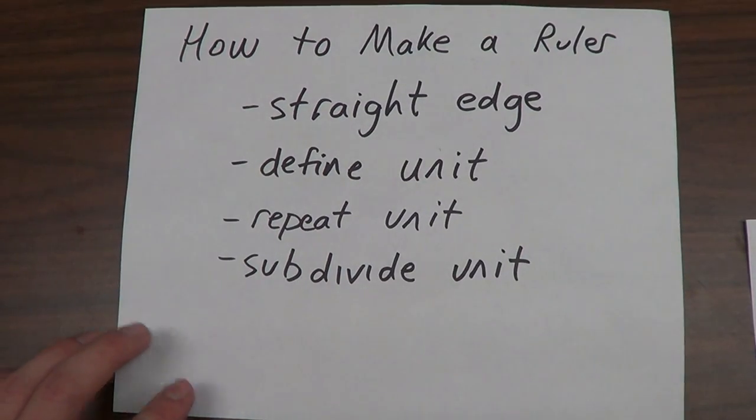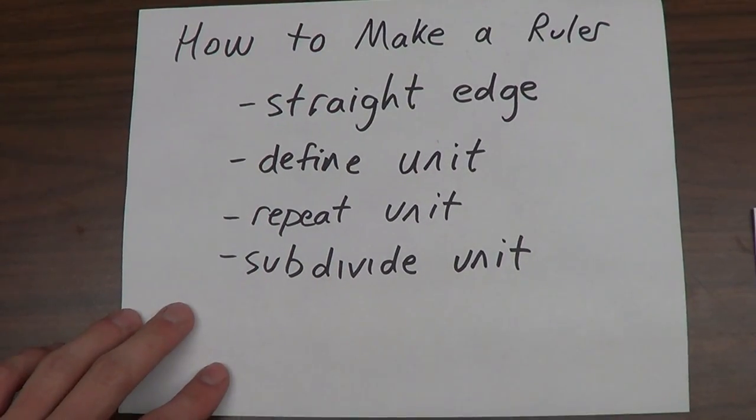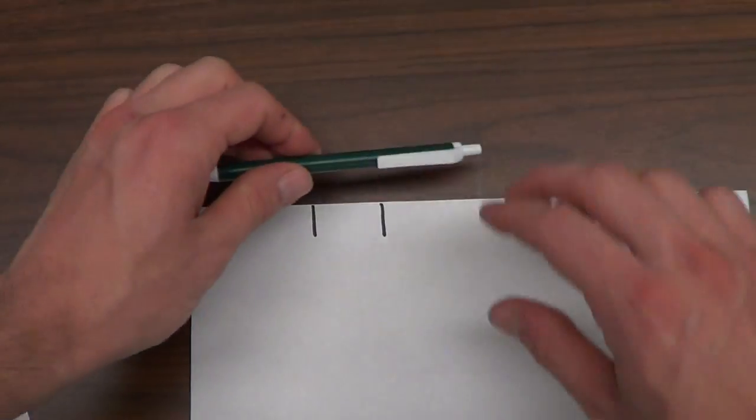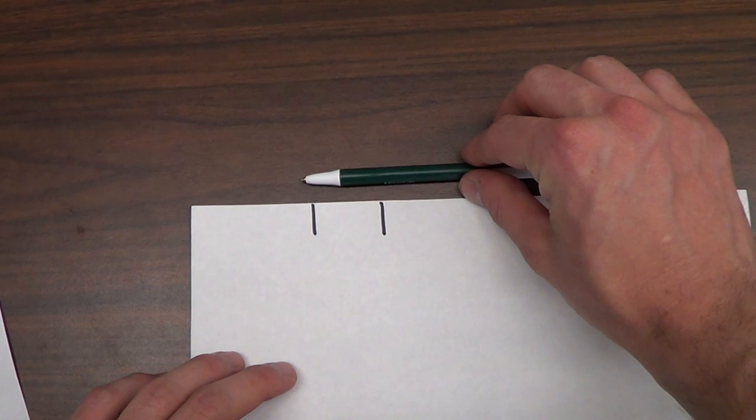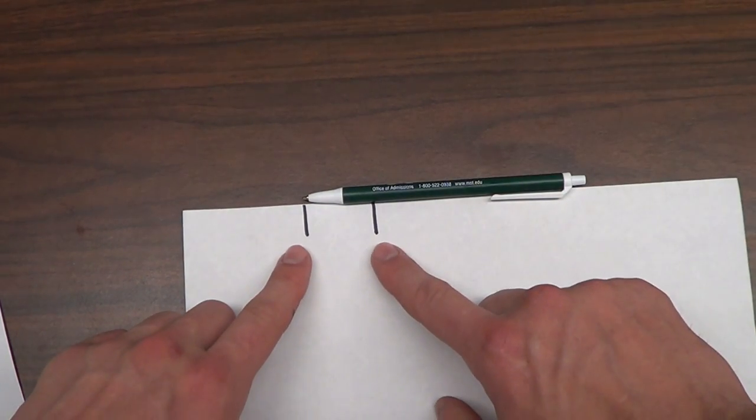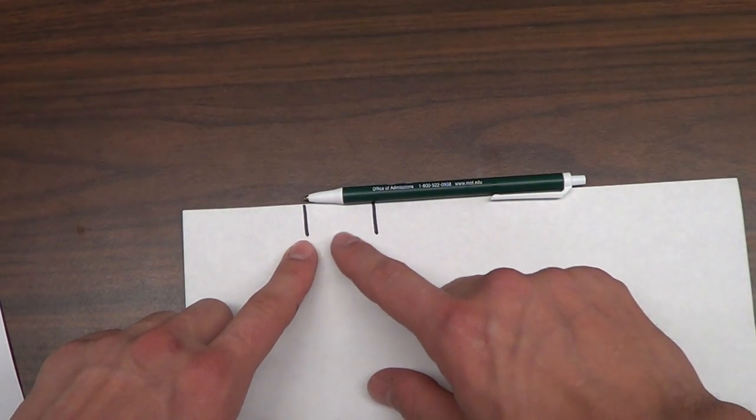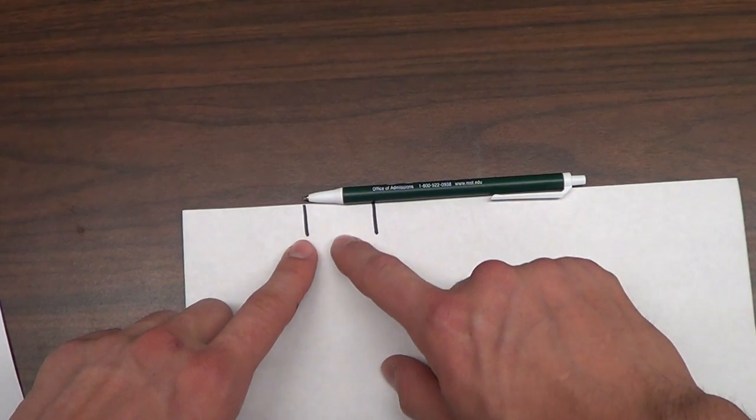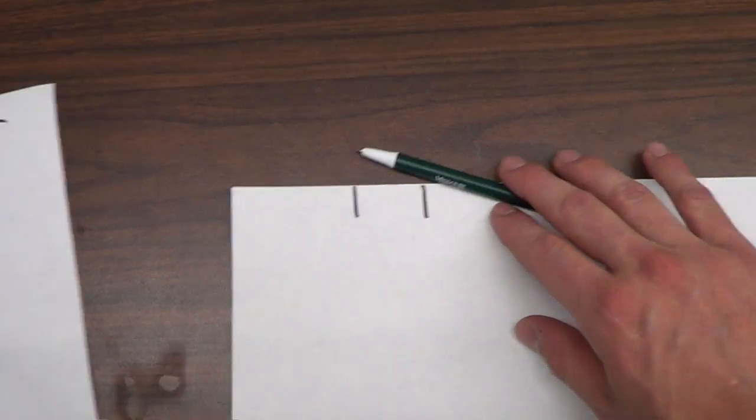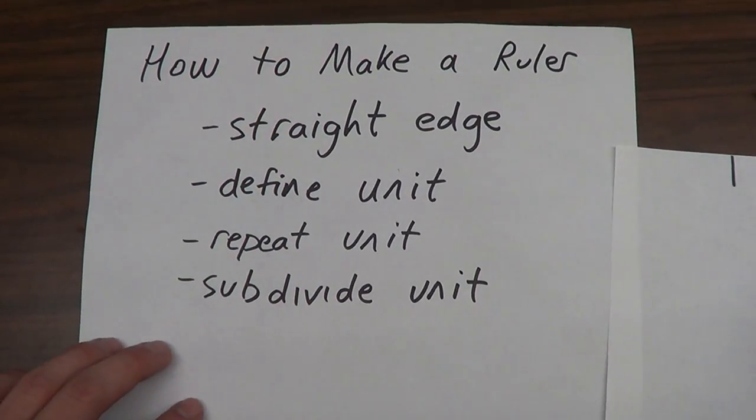So we need some sort of unit, and if we want to make something more precise than just this large, we need to subdivide that. If this is one, we could divide it in half and then we'd have half of a unit. So this kind of defines a ruler.